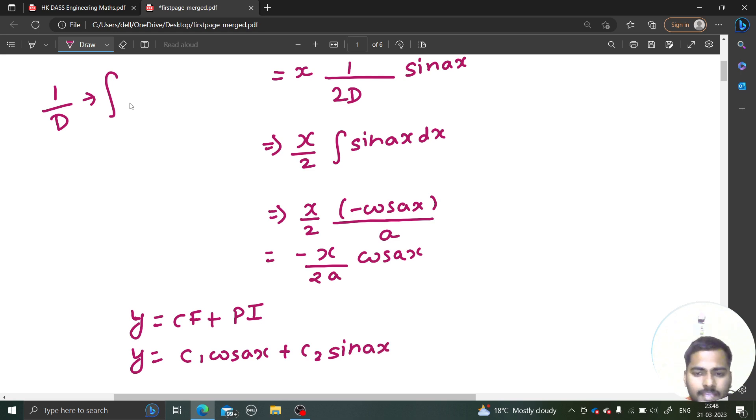And your PI came out to be minus x by 2a cos ax. So this is your final answer for this particular problem.